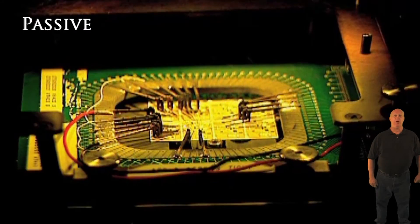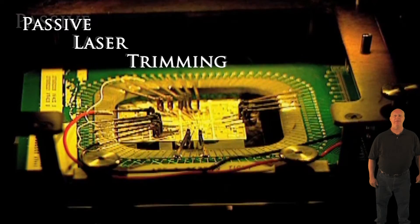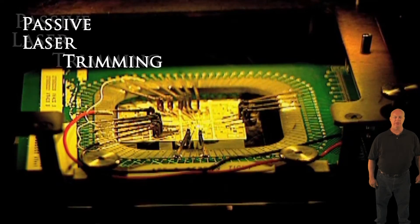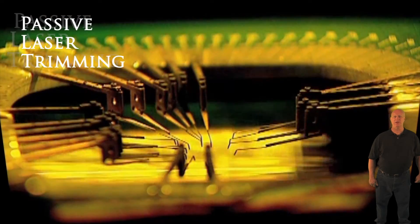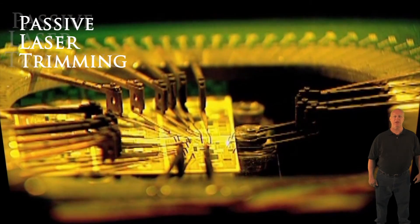The first level is called passive laser trimming and it is used during the manufacturing process of the circuit boards themselves. Resistance is measured in the circuit board connections, and where resistance needs to be adjusted,